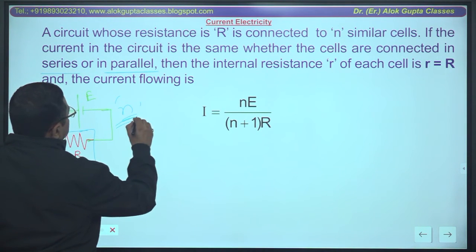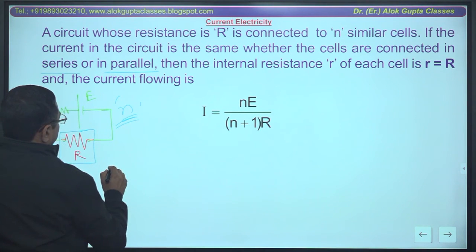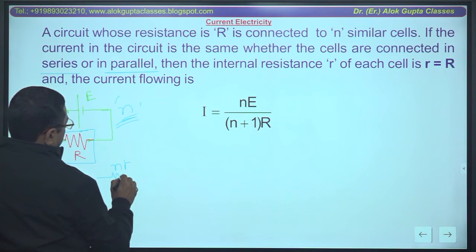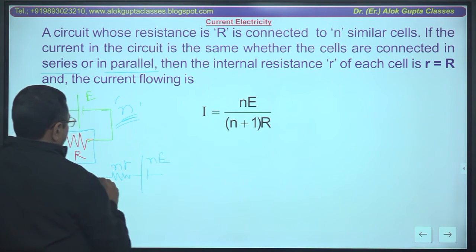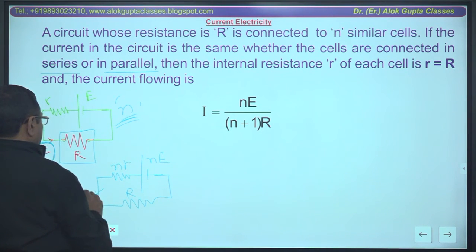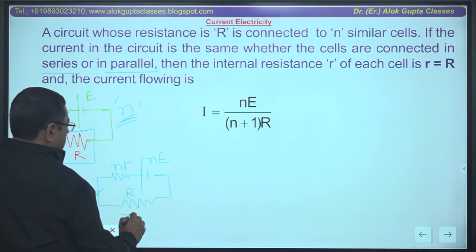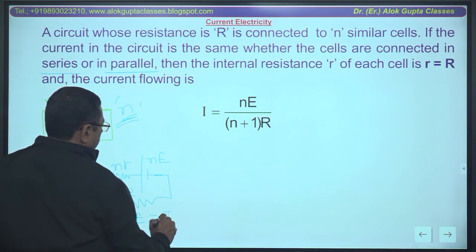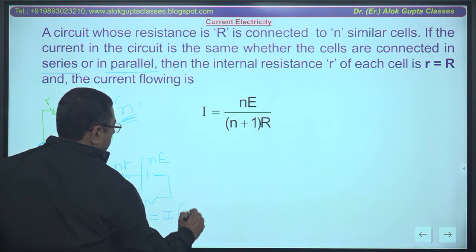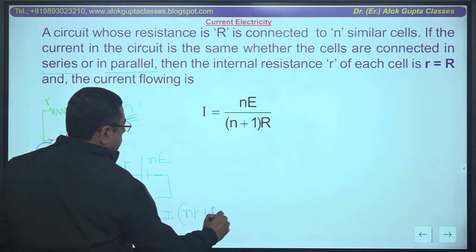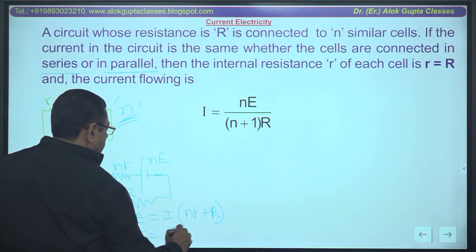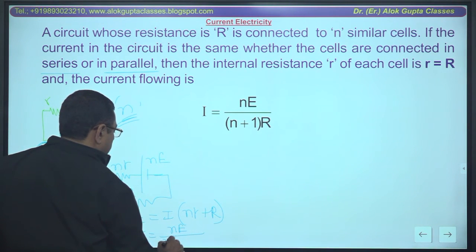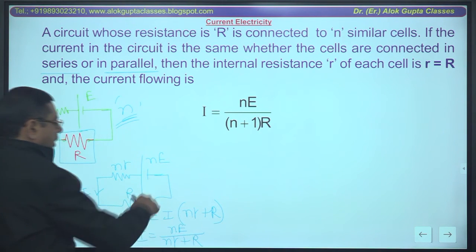Then if n cells are connected in series, internal resistance becomes nr, emf becomes nE. What is the external resistance? It is R. What is the condition? We can apply Ohm's law: V equals i into R, nr plus R. Current is equal to nE divided by nr plus R, when in series.